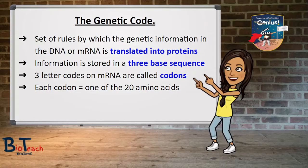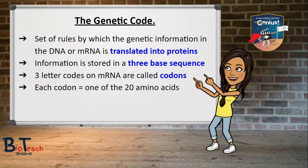The first thing we have to understand is what the genetic code is and how we can get from that to protein. The genetic information for the assembly of amino acids is stored in our DNA as a three-base sequence. These three letters on the mRNA will code for amino acids, and each of those three-base sequences are called codons. Each codon represents one of the 20 amino acids used to make proteins. The code is effectively universal, meaning it is the same in all living things, with a few minor exceptions.